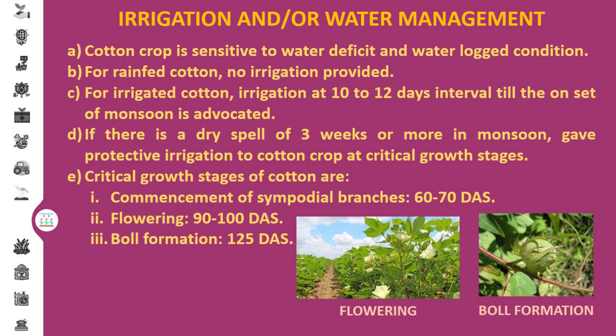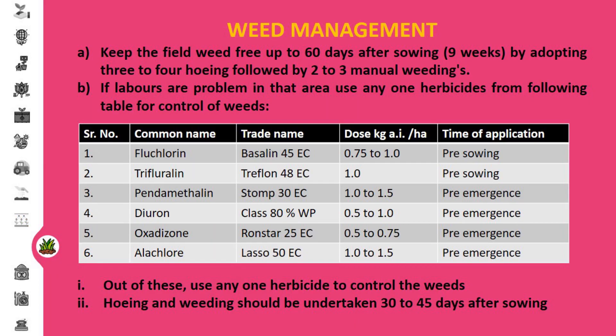Cotton crop is very sensitive to both water deficit and waterlogged conditions. For rain-fed cotton, there is no necessity to provide irrigation, but for irrigated cotton, irrigation should be given at 10 to 12 days interval till the onset of monsoon. If there is any dry spell for three weeks or more in monsoon, give protective irrigation at critical growth stages. The critical growth stages are: commencement of sympodial branches at 60 to 70 days after sowing, flowering at 90 to 100 days after sowing, and boll formation at 125 days after sowing.